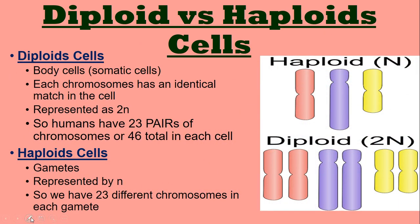When we talk about this, we need to talk about diploid cells and haploid cells, which kind of goes along with somatic cells and gametes. Diploid cells are your body cells or your somatic cells. Each chromosome has an identical match in the cell, and in textbooks they're represented by 2N — meaning there are two chromatids. In humans, we have 46 chromosomes in each of our diploid cells, and that's 23 pairs.